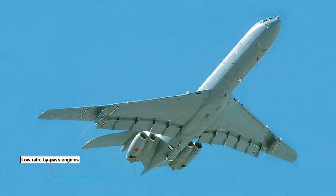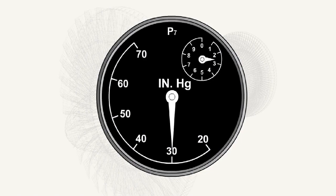Older low ratio bypass engines like the Rolls-Royce Conway use the jet pipe pressure P7 as an indication of engine power. The P7 system gauge can be marked in inches of mercury, pounds per square inch, or a percentage of the engine's maximum thrust.